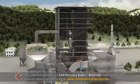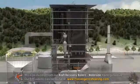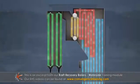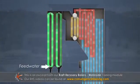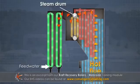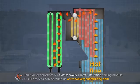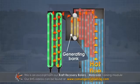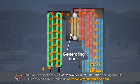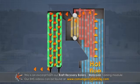In order to optimize the efficiency of the boiler, the relatively cool feed water is preheated using hot flue gases before it flows to the steam drum of the boiler. After leaving the generating bank, the flue gas is still quite hot.